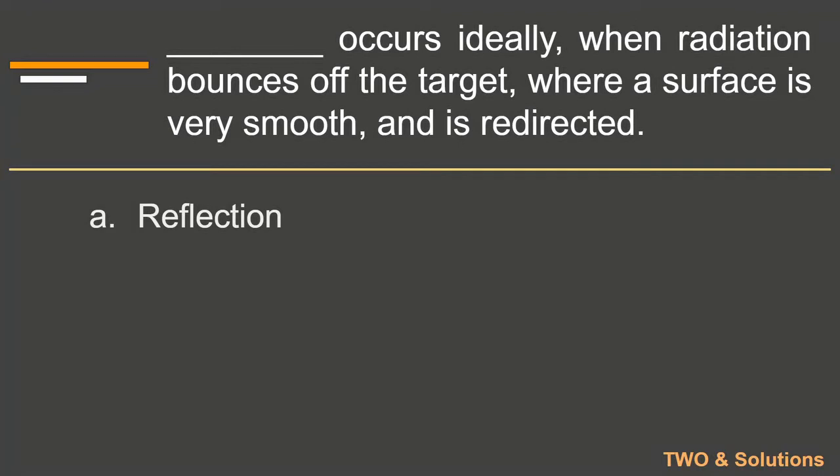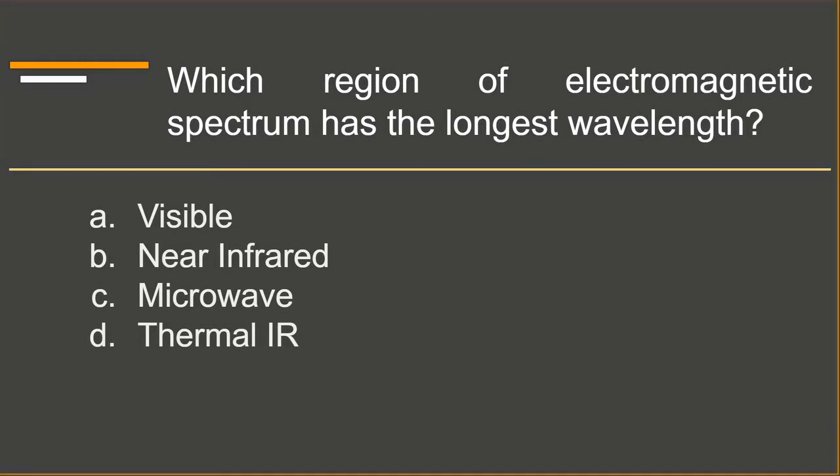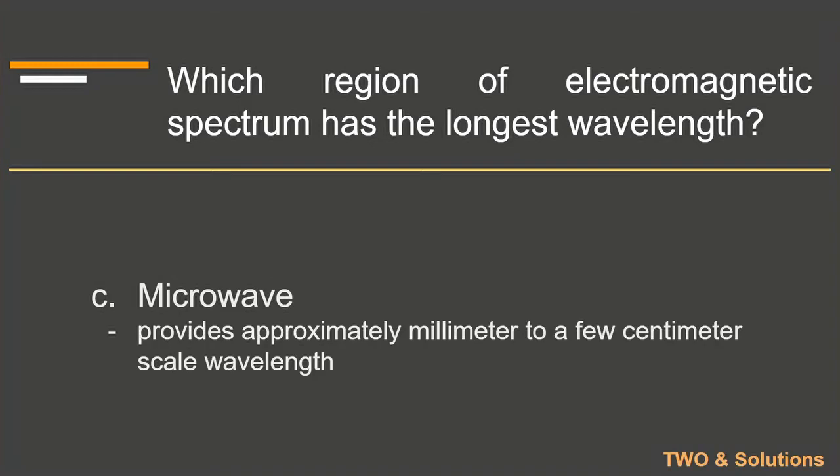Which region of the electromagnetic spectrum has the longest wavelength? Microwave. Microwave wavelengths are approximately millimeter to a few centimeter scale wavelengths.